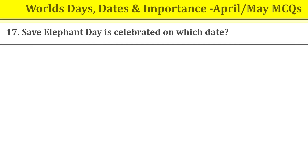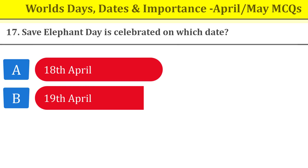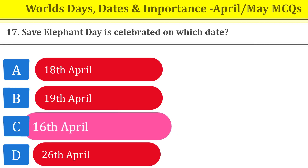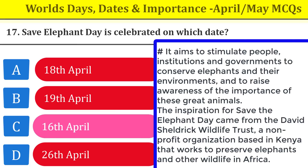Question number seventeen: Save Elephant Day is celebrated on which date? It is on 16th April. Its aim is to stimulate people, institutions, and governments to conserve elephants and their environment, and to raise awareness of the importance of these great animals. The inspiration for Save Elephant Day came from the David Sheldrick Wildlife Trust, a non-profit organization based in Kenya that works to preserve elephants and other wildlife in Africa.